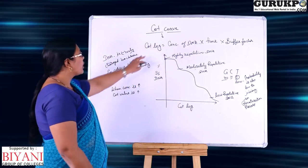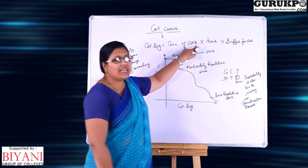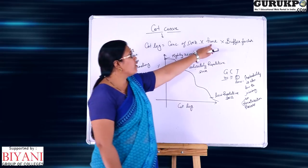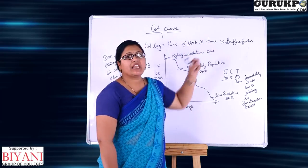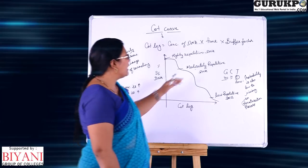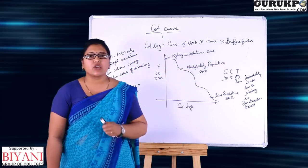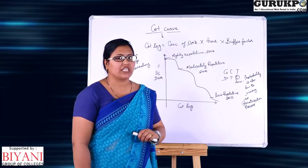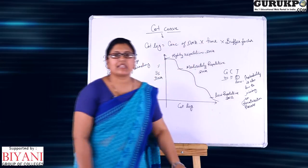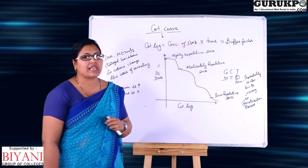So what does the Cot value actually represent? The Cot value is the product of the DNA concentration present and the time — the incubation time given in the renaturation process. The buffer factor, particularly the cation concentration, also plays a role.